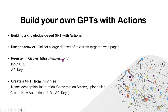Once we do that, we can go into ChatGPT and create our own GPT. This can be done from the configure tab where we specify the name, description, some instructions, and conversation starters. We also have to upload some files and create new actions, which basically refers to Gapier which contains all the actions we need.